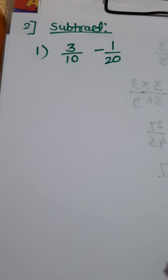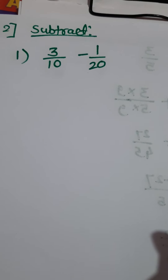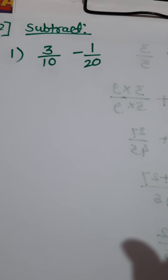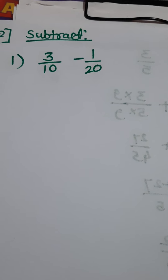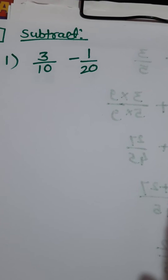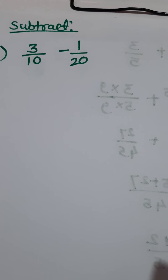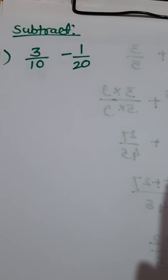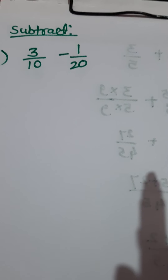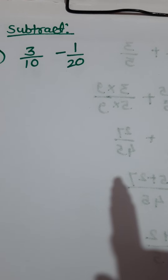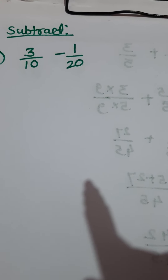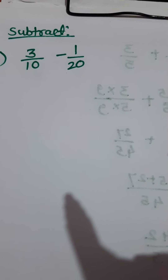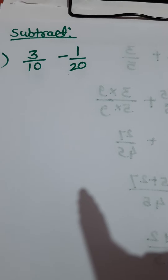Then how to subtract unlike fractions? Look at the first problem from question number 2 of problem set 22: 3 upon 10 minus 1 upon 20. The first fraction has denominator 10 and the second fraction's denominator is 20. The first work is to make the denominators equal. If you observe the denominators, they are 10 and 20, and immediately it strikes you that 10 and 20 are from the same table.